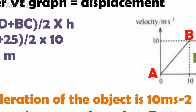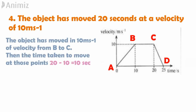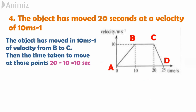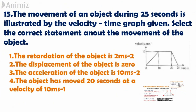Option 4 states the object moved for 20 seconds at a velocity of 10 m/s. In the graph the object moves at 10 m/s from B to C, but the time taken for that portion is 20 minus 10, which equals 10 seconds — not 20 seconds. Therefore that is also wrong. The correct answer is option 1.